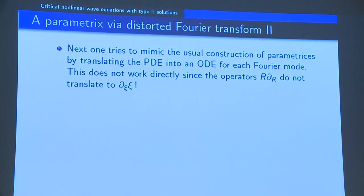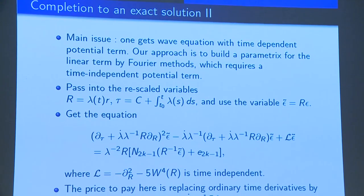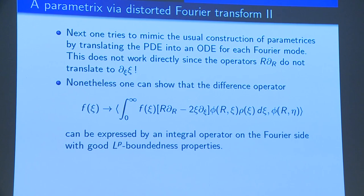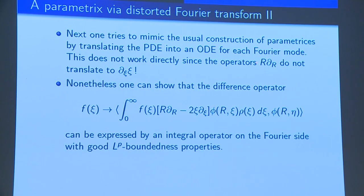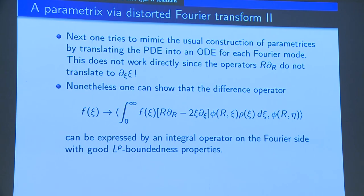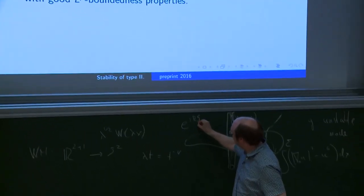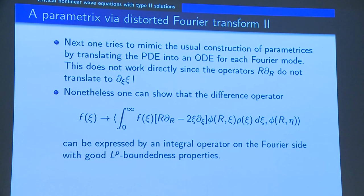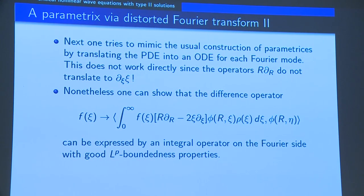We would like to solve this hideous wave equation by using a Fourier representation of ε̃ and solving ODEs for every Fourier mode — as one does for the usual wave equation in R^{3+1}. However, there is a problem: R∂_R does not become ξ∂_ξ on the Fourier side, because the eigenfunctions φ(r,ξ) are not just e^{irξ} — they are something much more complicated. You can describe them asymptotically but only implicitly. In particular, R∂_R does not become ξ∂_ξ, and translating it generates error terms linear in the function you are solving for.